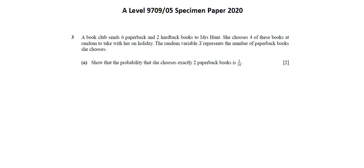A book club sends six paperback and two hardback books to Mrs. Hunt. She chooses four of these books at random to take with her on holiday. The random variable X represents the number of paperback books she chooses. Requirement A: Show that the probability that she chooses exactly two paperback books is 3 of 14.